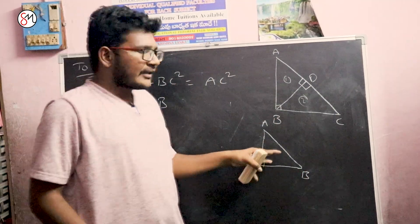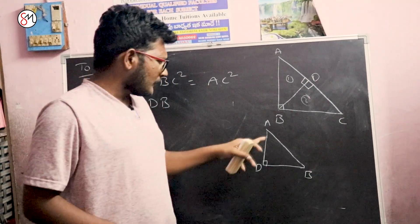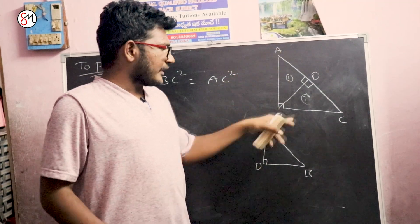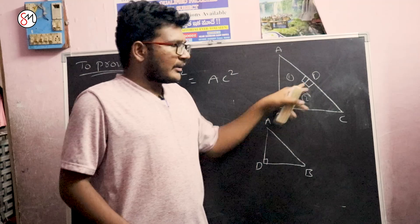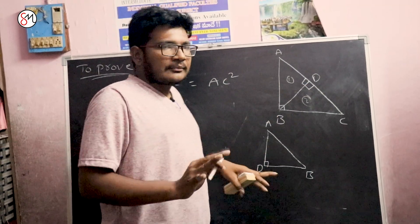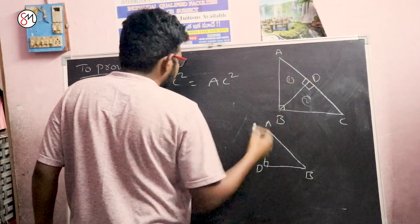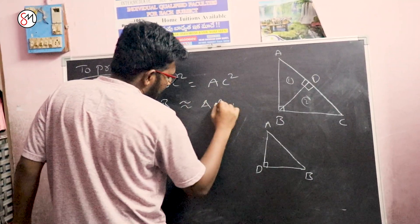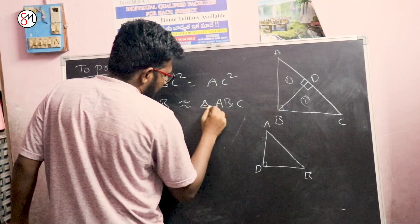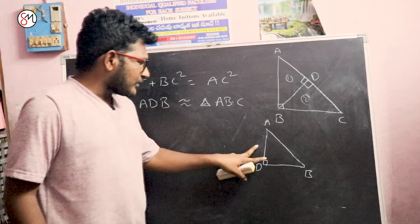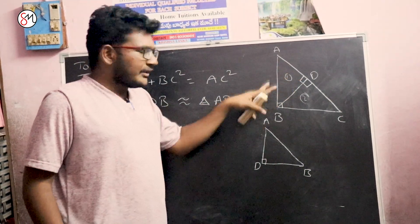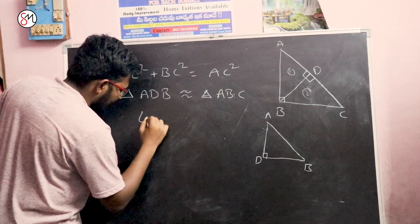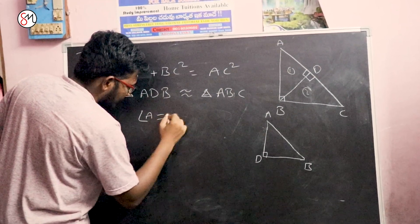This is the first triangle. This is the angle mark. This is the second triangle — this is the normal right angle. Let's look at this: triangle ADB is similar to triangle ABC. Let's look at this small triangle. Angle A is equal to angle A — is this correct? Yes, angle A is equal to angle A.